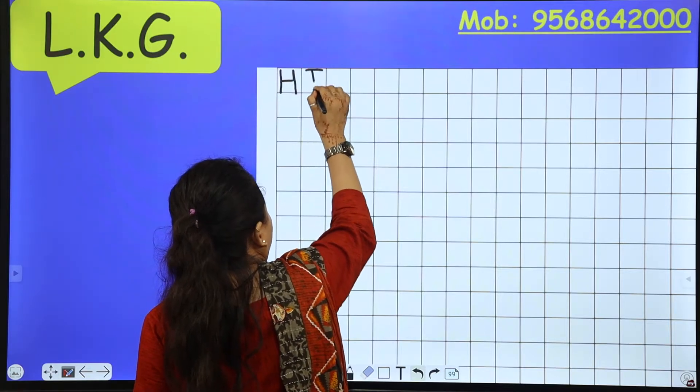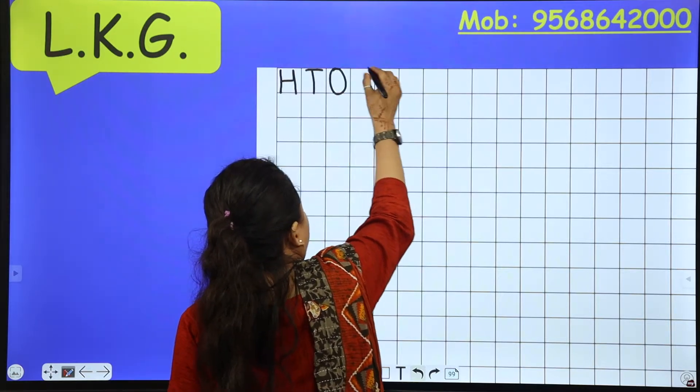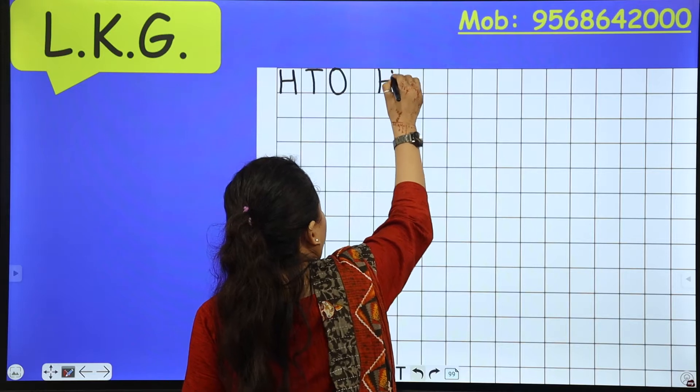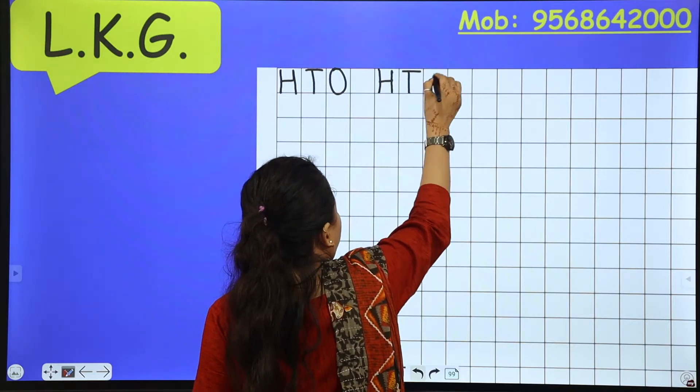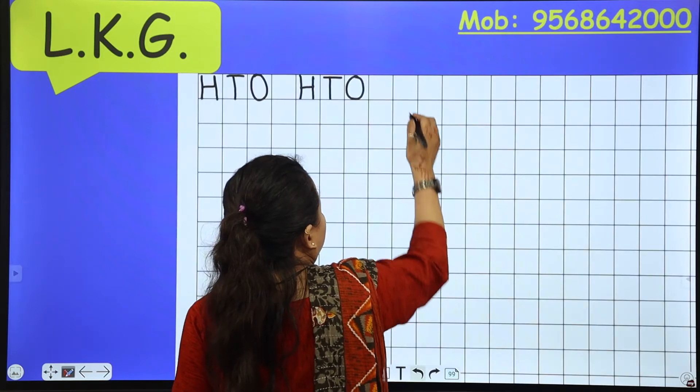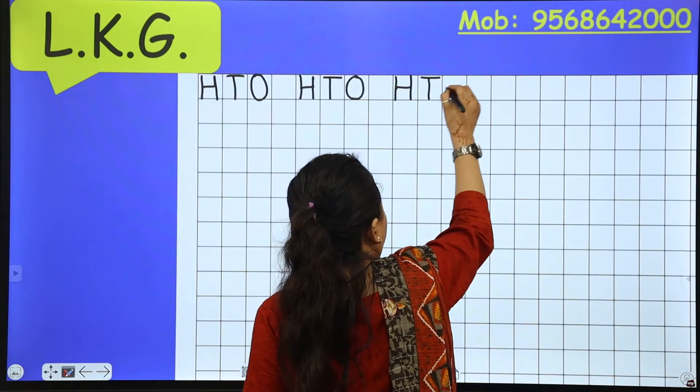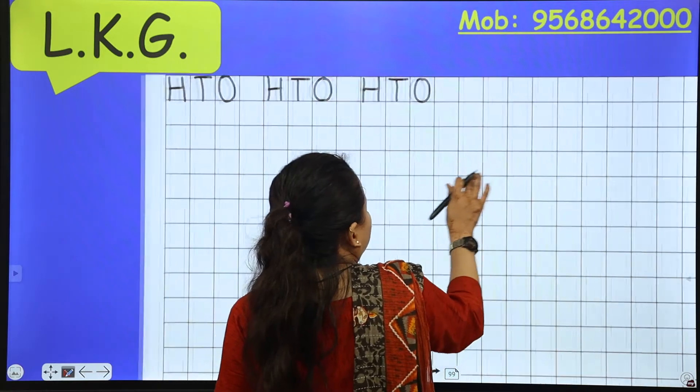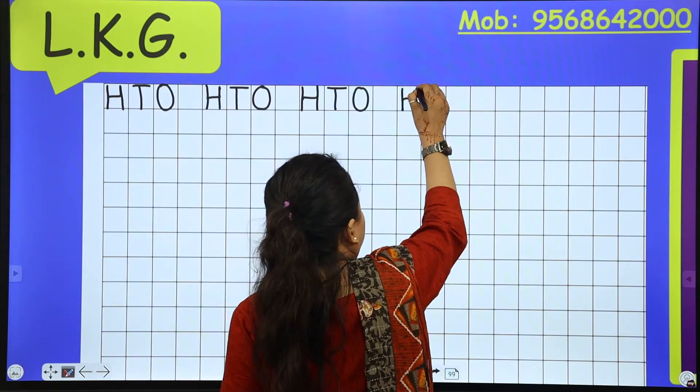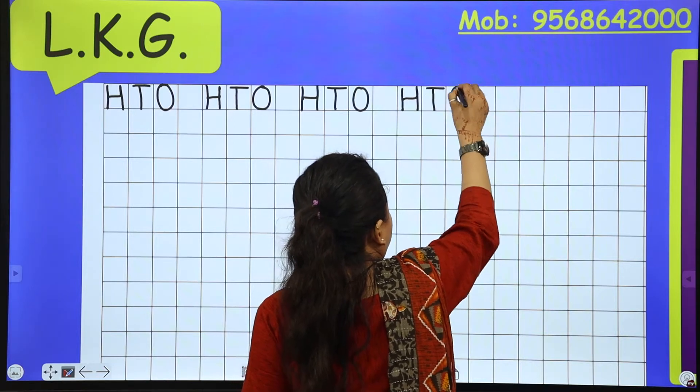So H, T, O. Leave one box. Again H, T, O. Leave one box. Again H, T, O.